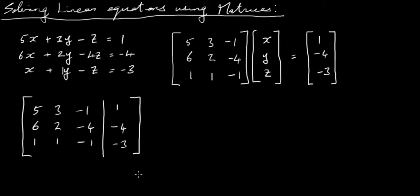What I'm going to do is reduce this part of the augmented matrix down to what's called reduced echelon form — essentially turning it into an identity matrix, where you end up with a 1, 1, and 1 on the diagonal, and the three, minus one, minus four all become zeros, and the six, one, and one become zeros as well. As I change these numbers I'm going to change the right-hand side numbers as well.